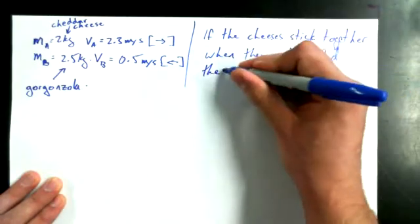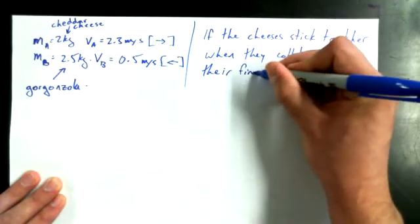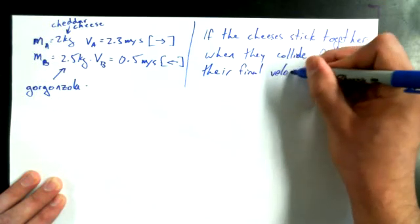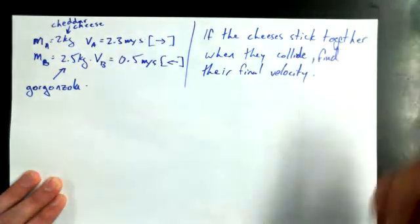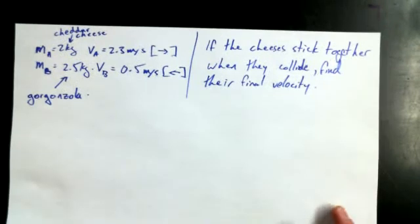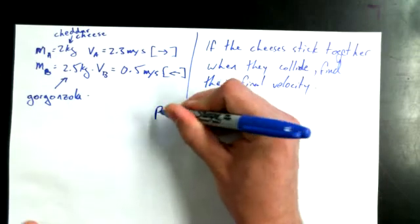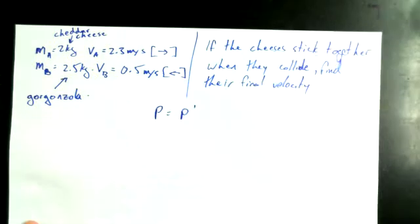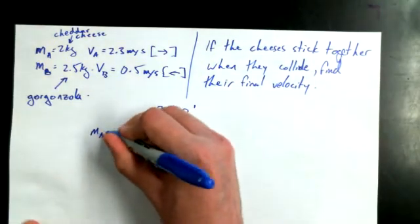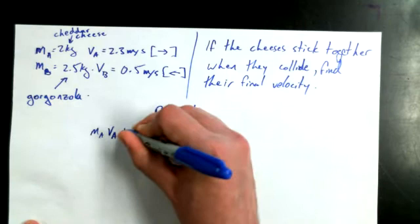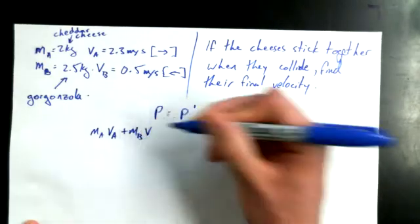Find their final velocity. And we're going to use conservation of momentum. So even if this is an inelastic collision, momentum is going to be conserved. That's the law. Okay. So P is equal to P primed.